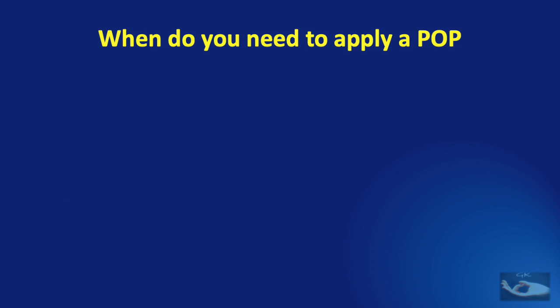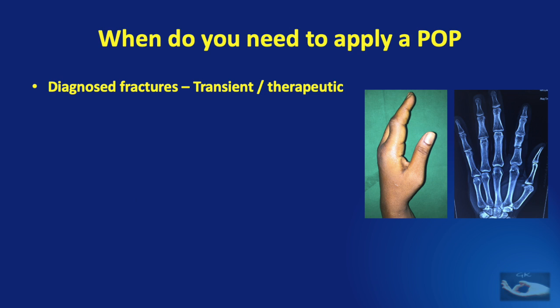So which are the situations where you need to apply a POP on the hand? The first is diagnosed fractures. When you have diagnosed some fracture, the POP should be applied either as a temporary procedure before the definitive treatment is undertaken or the POP itself can be the treatment for the fracture.